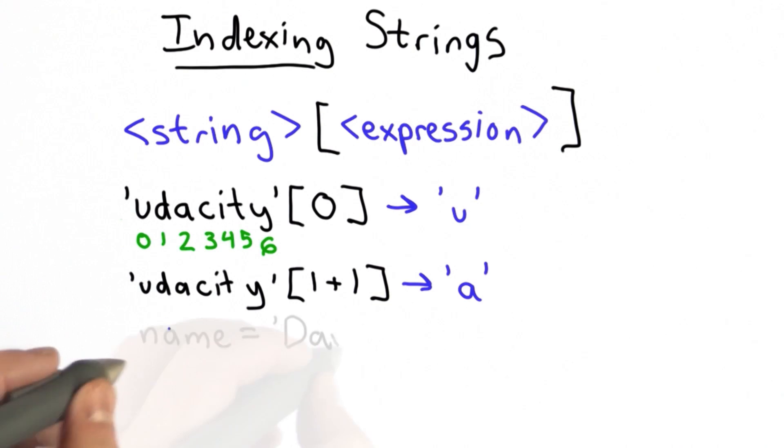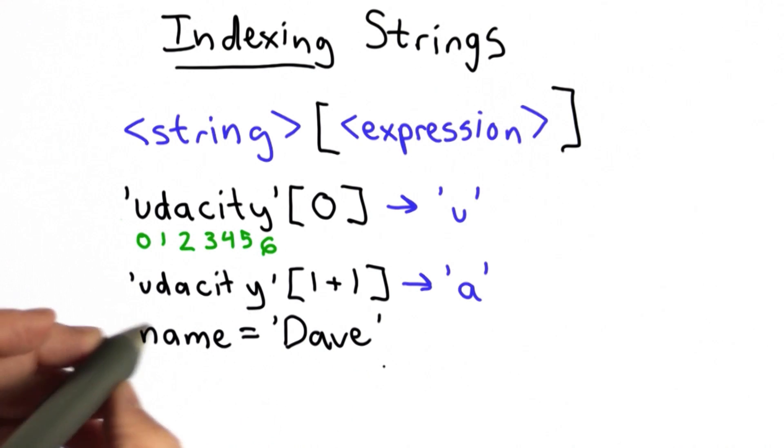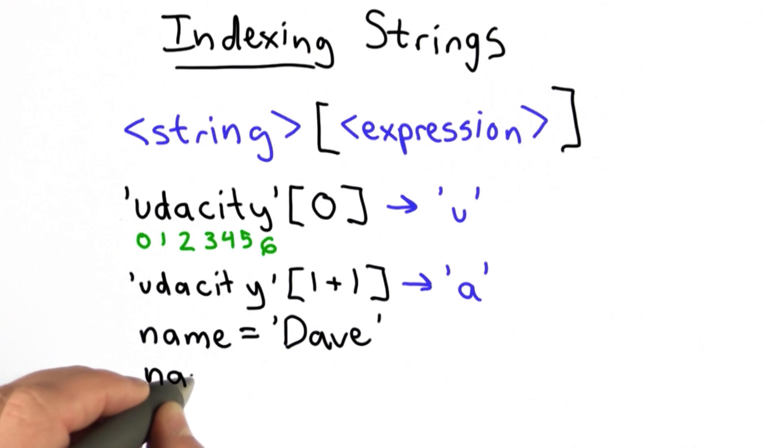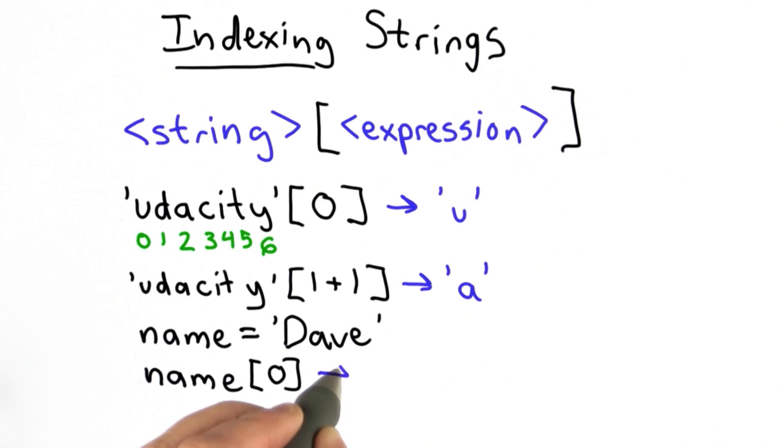It looks a lot more normal when we're doing it with a variable. We've initialized the variable name to the string Dave. Then when we do name index 0, whatever the variable name is, that will give us the first letter of that string. In this case, it's the uppercase D.